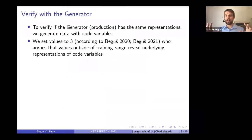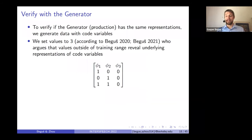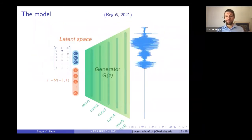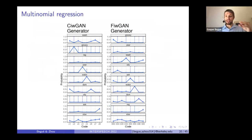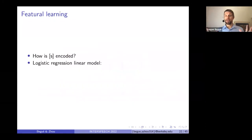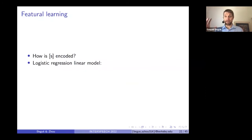To verify that the generator and the Q network actually share code representations, we verify lexical learning by generating data with the same latent codes seen in the classification models. We pass these codes through the generator while keeping the latent space constant, and we see that in the generator as well, each code representation corresponds to a lexical item in both the CIWGAN and FIWGAN architectures. Each code gets associated with a unique lexical item in both the generator and the Q network.